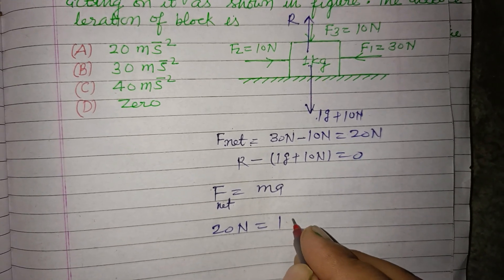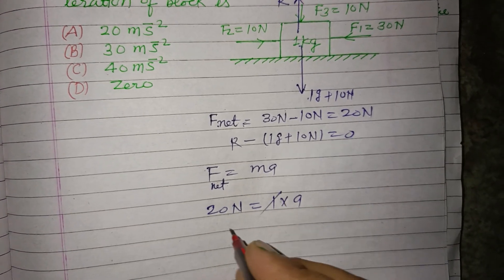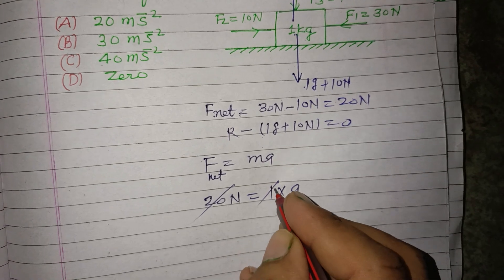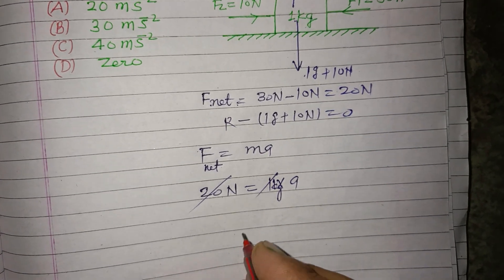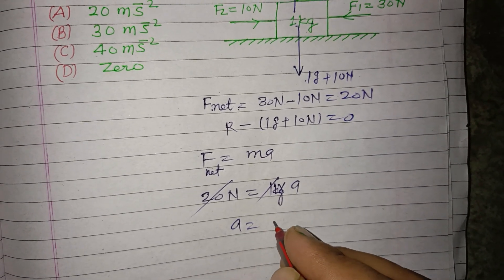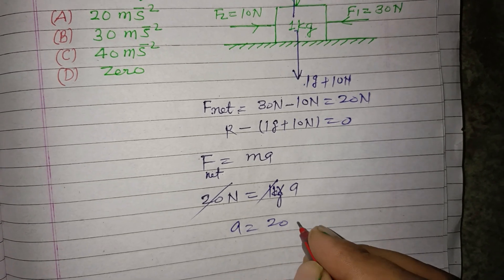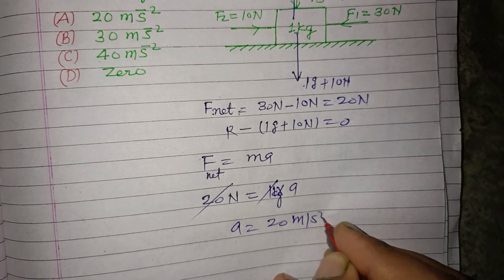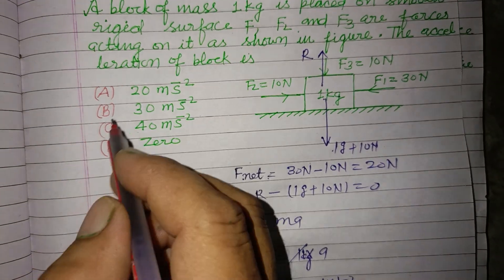The mass of block is 1 kilogram. So when we divide, 1 kilogram times a equals 20 Newton, so a equals 20 meters per second squared. 20 meters per second squared is the acceleration of the block.